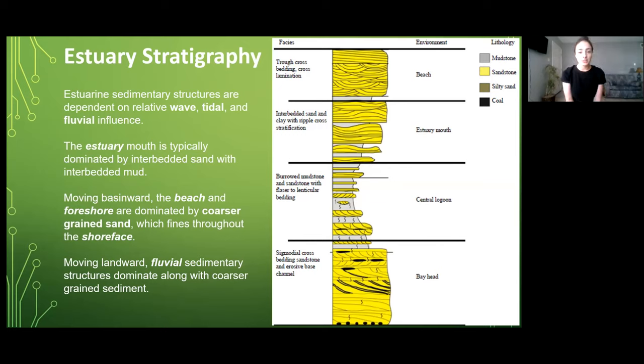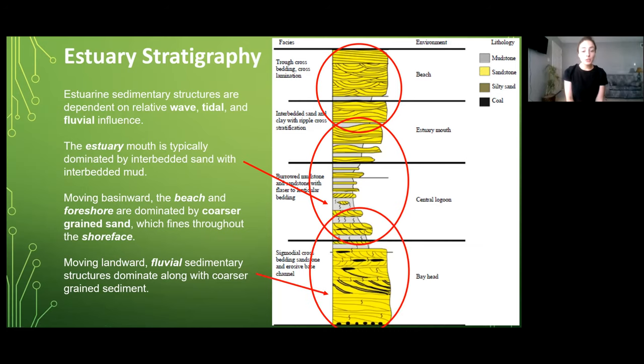Now let's talk about estuary stratigraphy. This is a stratigraphic column showing the progression from the bayhead to the central lagoon to the estuary mouth to the beach. We already mentioned that estuarine processes and deposition are dependent on relative wave, tidal, and fluvial influence. This is also true for the sedimentary structures in an estuarine sequence. The estuary itself is typically dominated by interbedded sand and mud facies and as you move to the beach you get coarser grained sand which fines throughout the shoreface. Moving landward away from the ocean basin you get fluvial sedimentary structures along with coarser grained sediment.